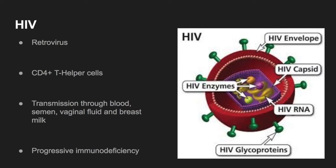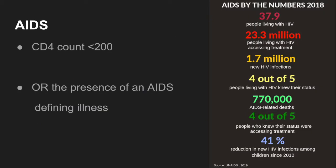HIV is a retrovirus that infects the CD4 helper cells. Modes of transmission include blood, semen, vaginal fluid, and breast milk. This leads to a progressive immunodeficiency which we call AIDS, defined as a CD4 count of less than 200 or the presence of an AIDS defining illness. Back in 2018, we had 770,000 AIDS-related deaths worldwide.